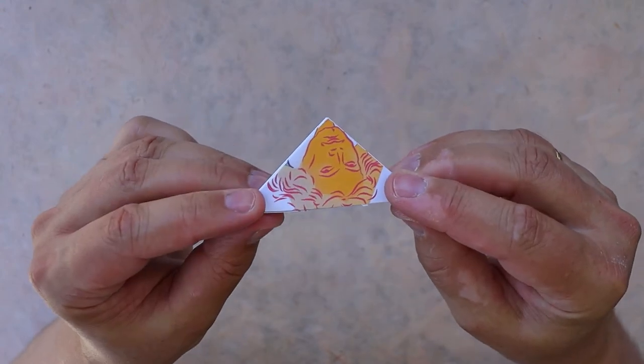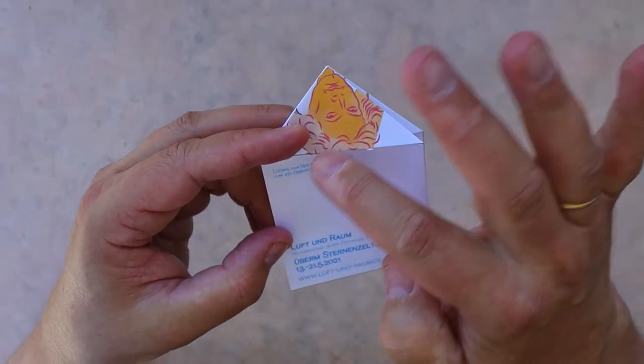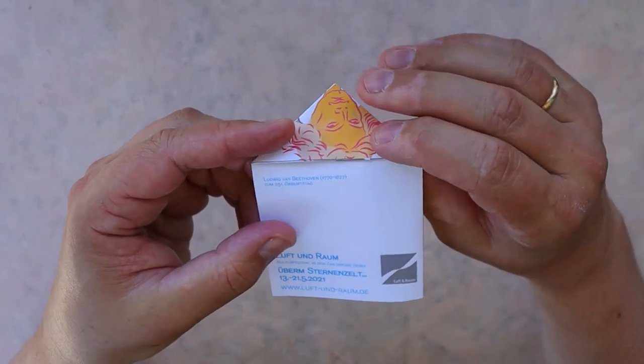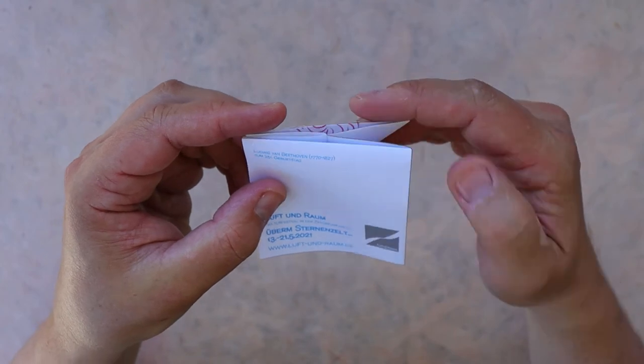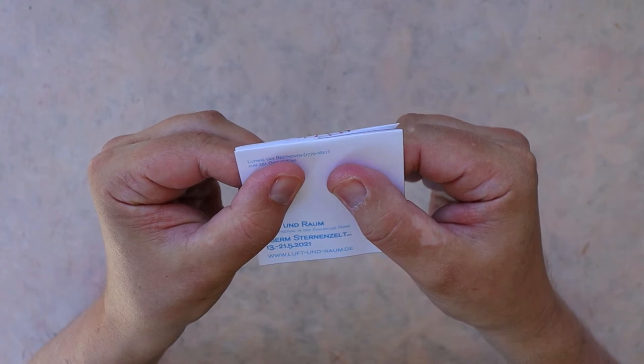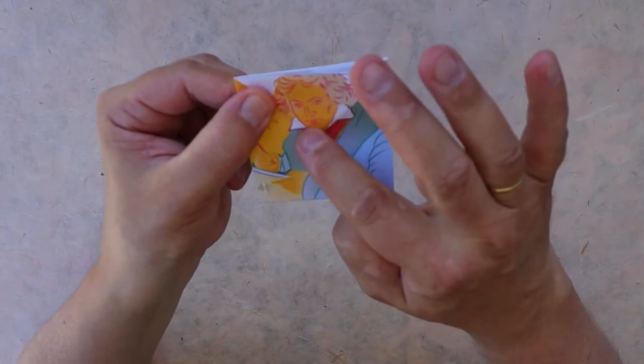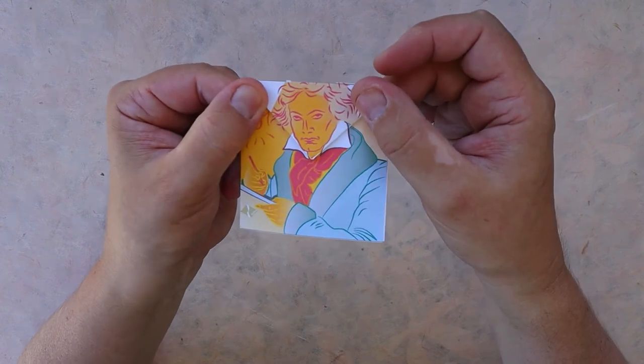That's it. And then fold back this upper triangle like so on the existing crease. On the other side you see that the face already is in its right place.